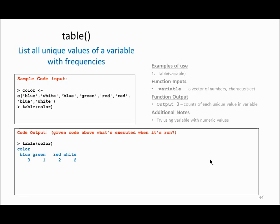Another function is called table, and it is very useful whenever you want to count the number of occurrences or frequency of each element in your data. For example, I have a variable called color that has different characters such as blue, white, green, and red, and I want to count how many times each appears. When I call table(color) it gives me the frequency of each unique element — blue three times, green one time, red two times, and white twice.